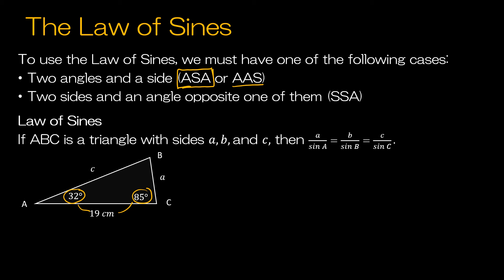We could also have angle-angle-side. So say instead of 32, we knew this angle right here. Then we would have angle-angle-side, and it would still work because the main thing you need in the Law of Sines is an angle and the side opposite. In our example, we don't have an angle and the side opposite, but we have two angles. Whenever we have two angles of a triangle, we know that we can find the third angle because the three angles of a triangle add to 180 degrees.